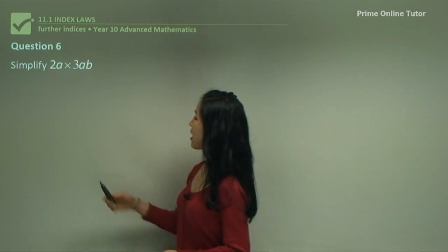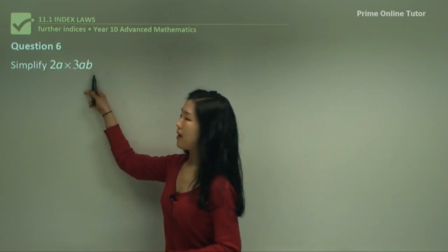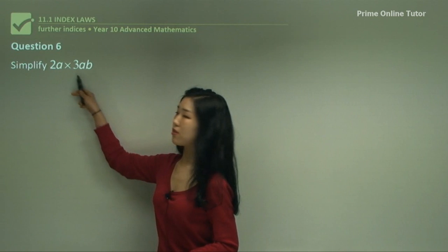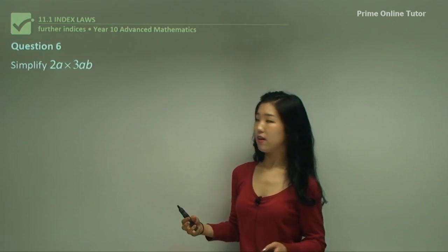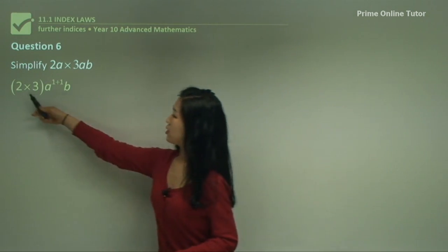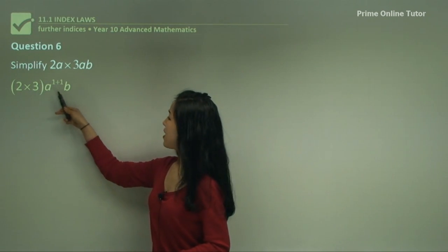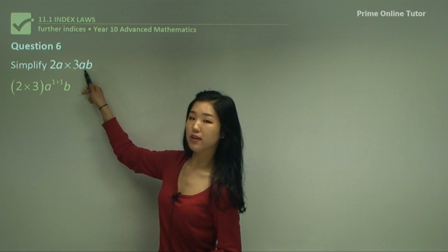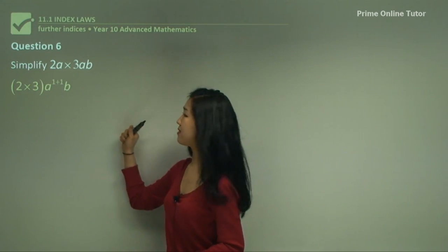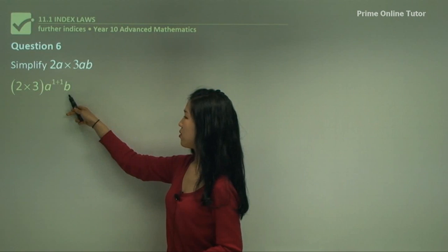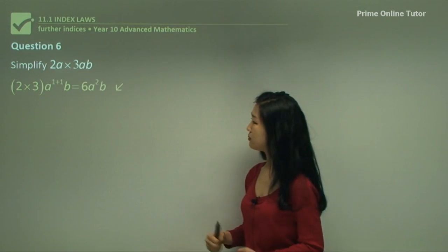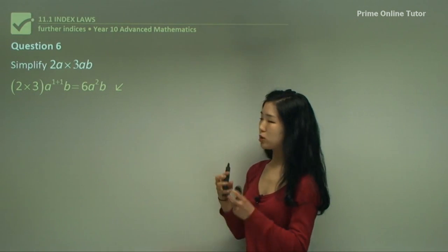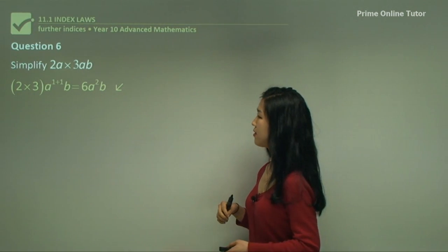Question six. Now we have a and b with coefficients 2 and 3. We multiply the coefficients together. So 2 times 3, and then a is a to the power of 1 and a to the power of 1, so we go a to the power of 1 plus 1. There's only one b, so we leave it as it is. Simplifying: 2 times 3 becomes 6. Make sure you multiply the coefficients together.